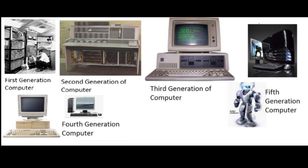1959 to 1965 is the period of second generation computers. Second generation computers were based on transistors instead of vacuum tubes. In this generation, transistors were used that were cheaper, consumed less power, more compact, more reliable, and faster than the first generation machines made of vacuum tubes.